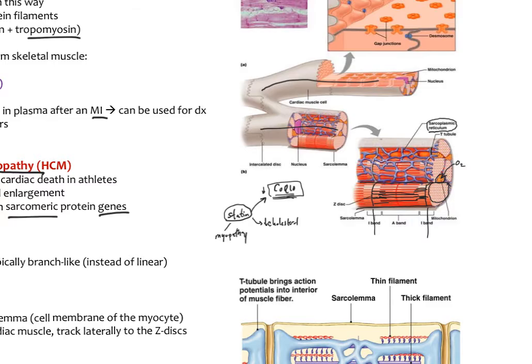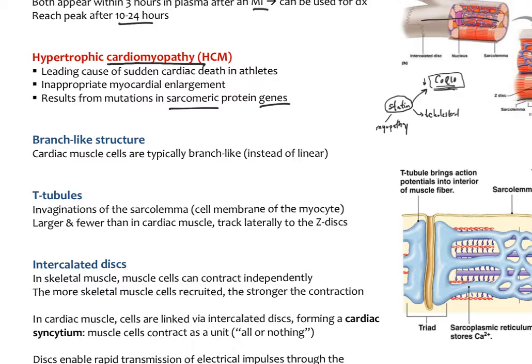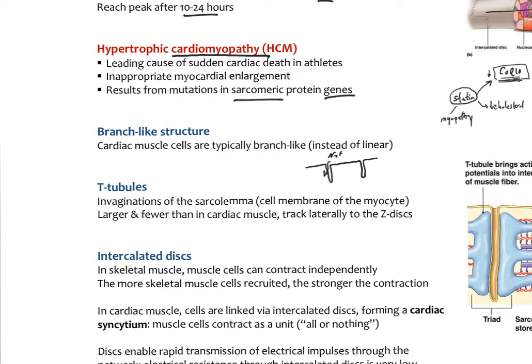Cardiac myocytes also have invaginations of the sarcolemma — the plasma membrane around the muscle cell, i.e., the cell membrane of the myocyte. The T-tubules are invaginations that go deeply inward and allow ions like sodium to easily enter inside the cell. Those electrolytes then cause changes like triggering calcium to be released from the sarcoplasmic reticulum into the cytoplasm, which triggers muscle contraction.